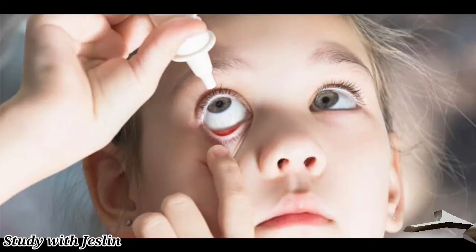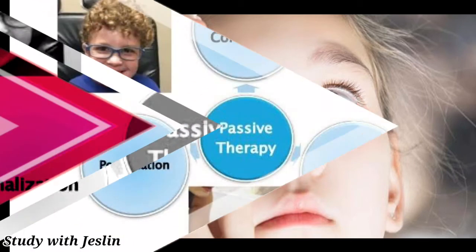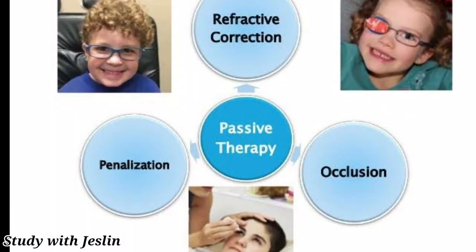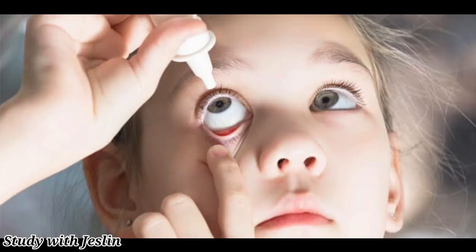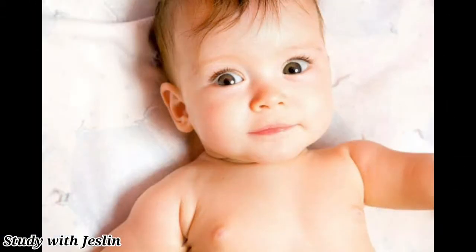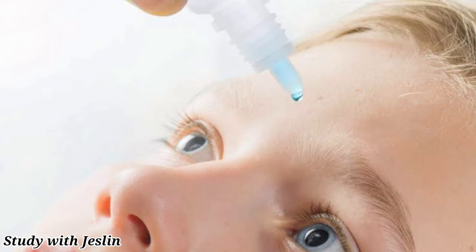Next is penalization therapy. In occlusion therapy and penalization, drops are used to blur the vision of the stronger eye, so the weaker eye is forced to work. You can use atropine drops to penalize the stronger eye and stimulate the weak eye.